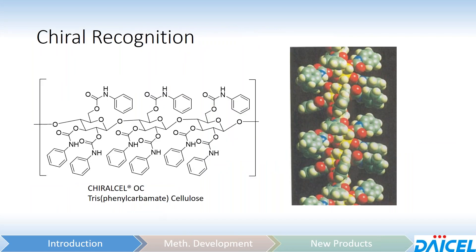Now, if we look at the polymer structure, it's not linear like you might think — it actually forms a left-handed twist helical structure, as shown here. This is ChiraCell OC, which is tris-phenylcarbamate cellulose. As I said, the structure is a left-handed helical twist.